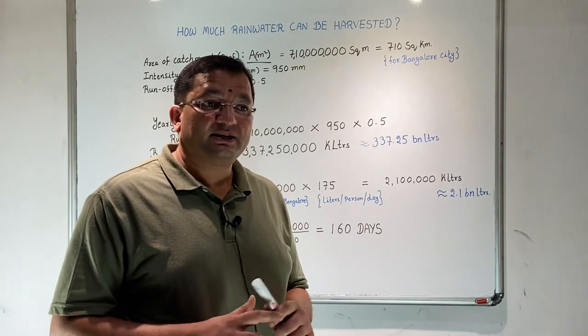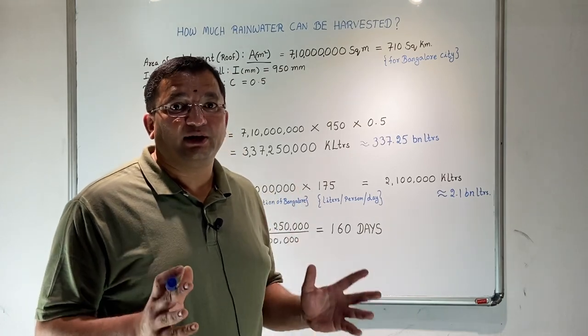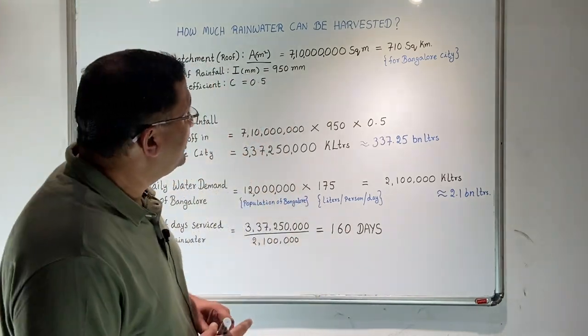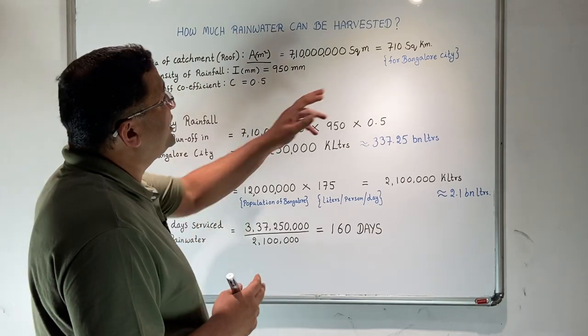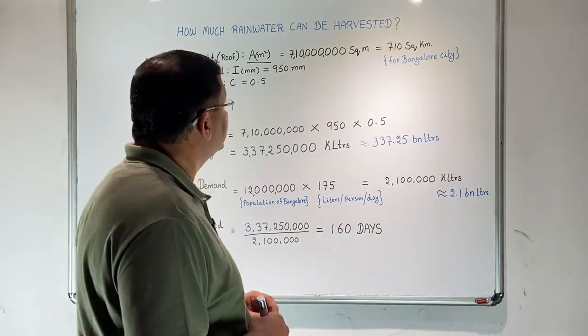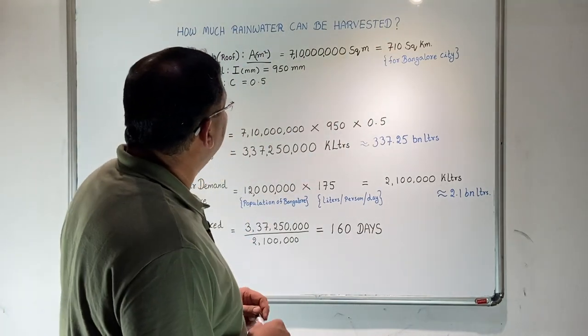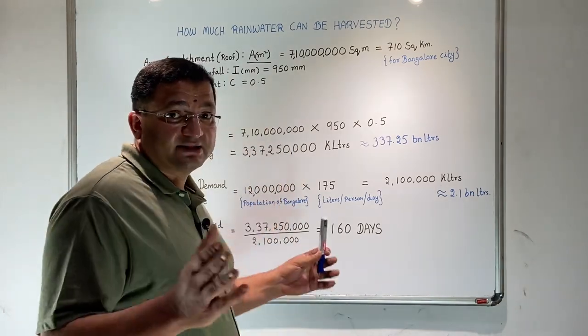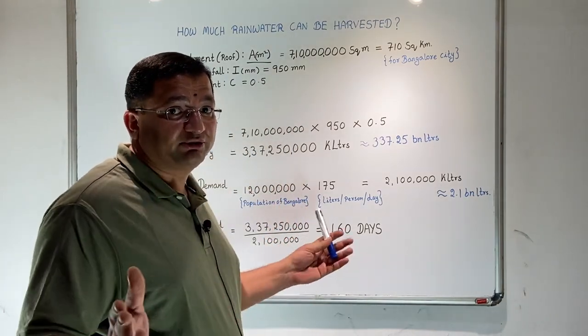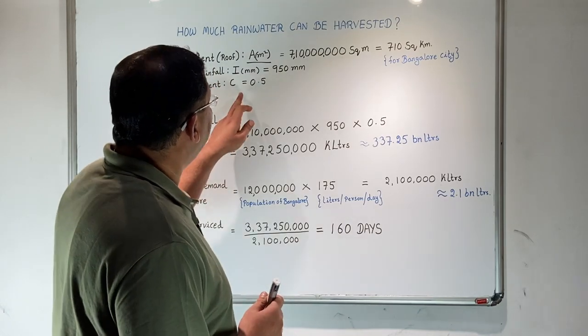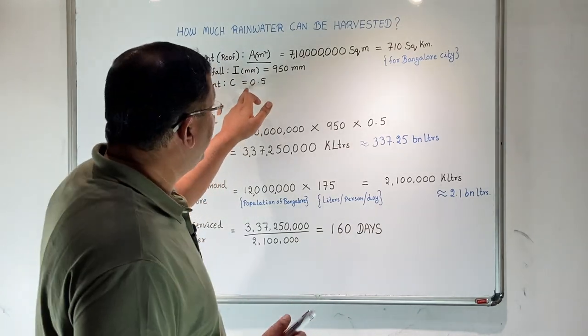We will extend the same calculation for the entire city of Bangalore. The Bangalore city has an area of 710 square kilometers. We take the intensity of rainfall to be 950 mm, the annual average rainfall over almost a century, and the runoff coefficient to be 0.5.